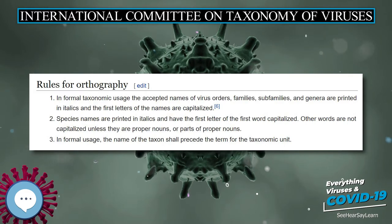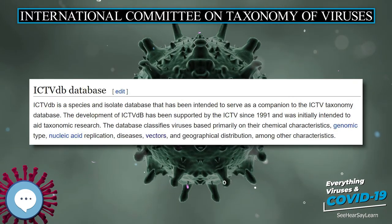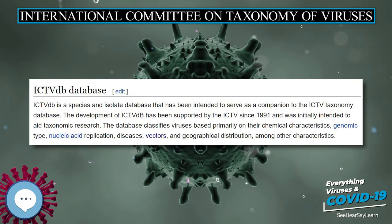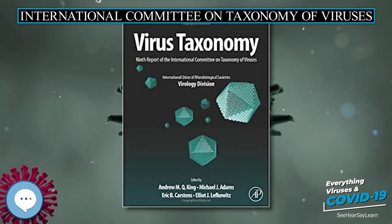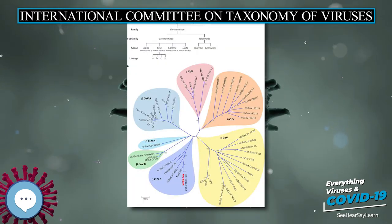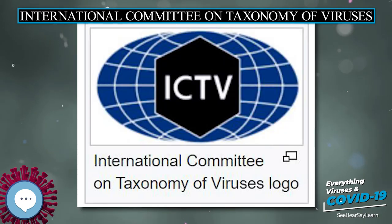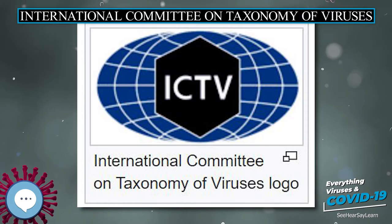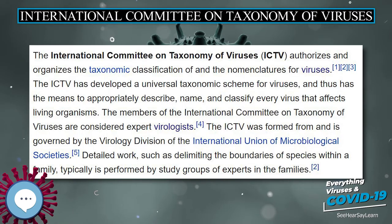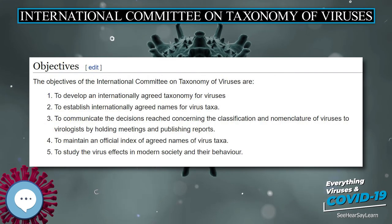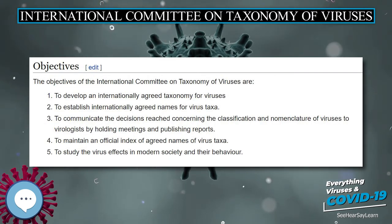Genera. A virus genus is a group of related species that share some significant properties and often only differ in host range and virulence. A genus name must be a single word ending in the suffix virus. Approval of a new genus must be accompanied by the approval of a type species. Subfamilies. A subfamily is a group of genera sharing certain common characters. The taxon shall be used only when it is needed to solve a complex hierarchical problem. A subfamily name must be a single word ending in the suffix viridae.